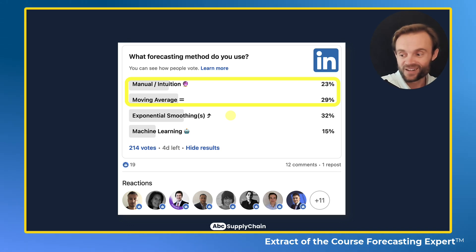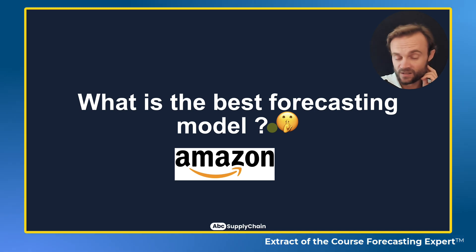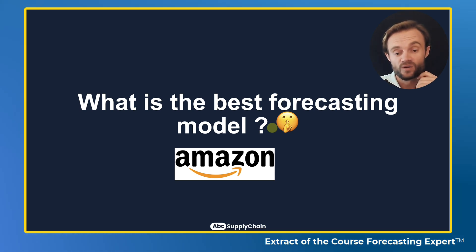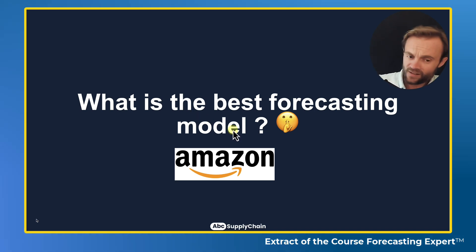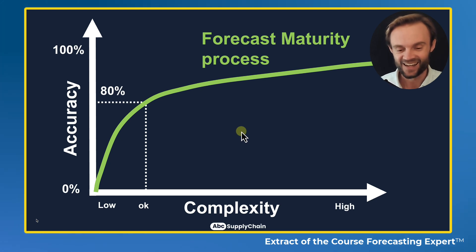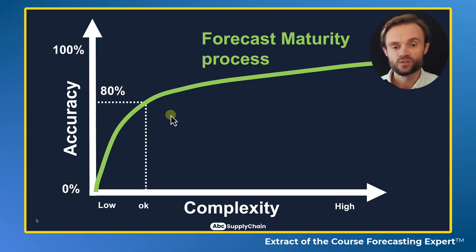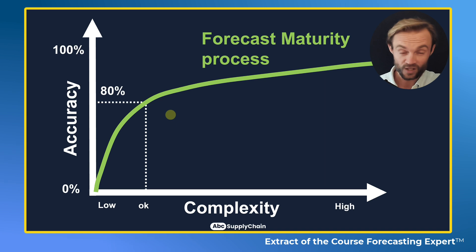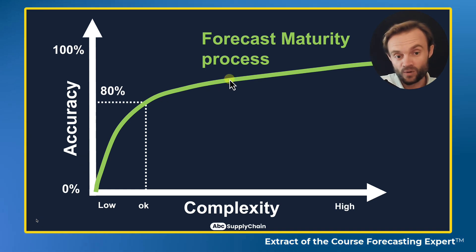Sometimes it's okay to keep it simple. When I asked my friend Mario, the forecasting expert from Amazon who has been developing models for many years, what the best model is — the answer was not necessarily the most complex one. For me, it's all about your forecast maturity process. Are you ready to include more complexity? Are you ready to use machine learning today? Maybe not, and that's okay. The more complexity you add, the more accuracy you should get technically — but at one point it's going to stabilize.